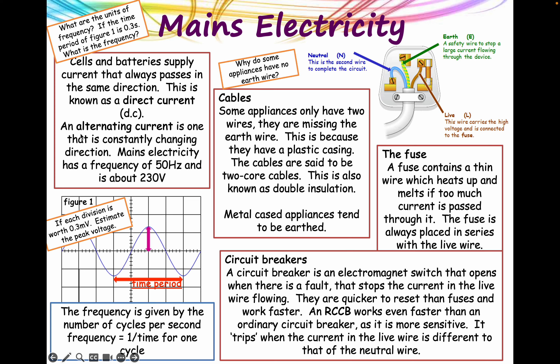Cells and batteries produce a constant current called direct current. Mains electricity uses alternating current - one that is constantly changing direction. It changes direction 50 times a second, so mains electricity has a frequency of 50 hertz and is about equivalent to 230 volts of DC. This is the value used in most European countries, the UK, and the UAE. In countries like the US and Canada, they use 60 hertz and about 110 to 115 volts.